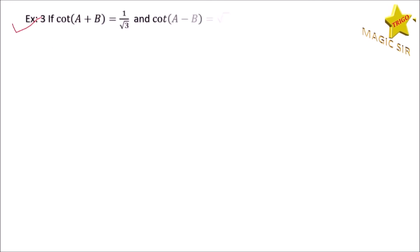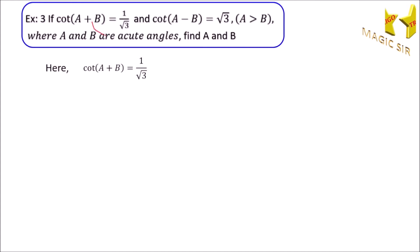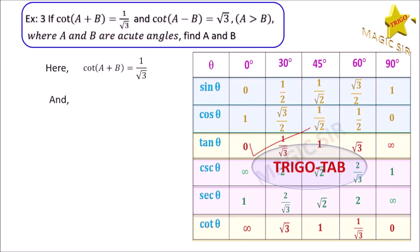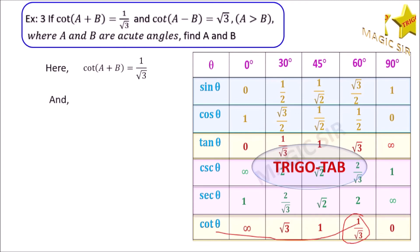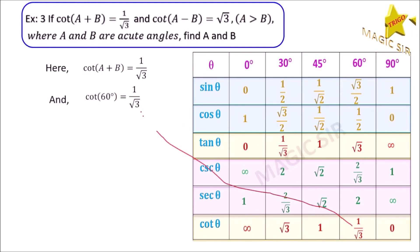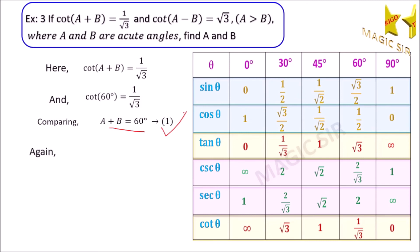Now let us take the third example. If cot(A+B) is equal to 1 upon root 3 and cot(A−B) is equal to root 3, where A and B are acute angles, we have to find angle A and angle B, where A is greater than B. We have given that cot(A+B) is equal to 1 upon root 3. Look at the Trigo tab — in the last row, cot theta equals 1 upon root 3, and in the first row, theta equals 60 degrees. So we write cot 60 degrees equals 1 upon root 3.